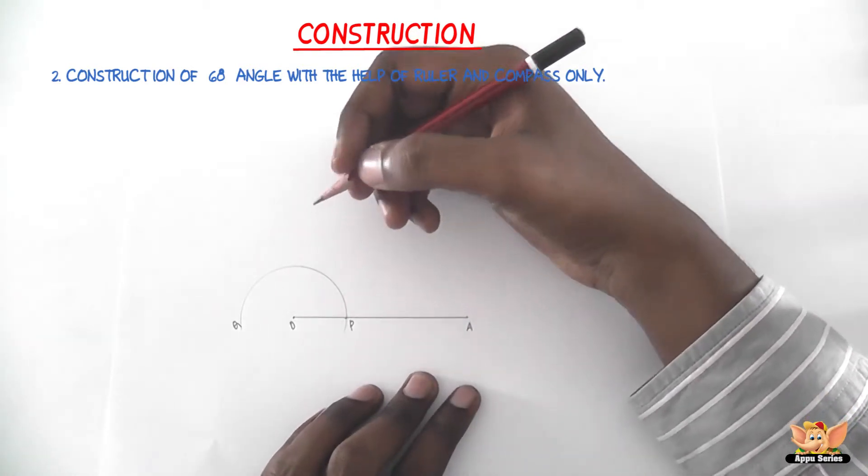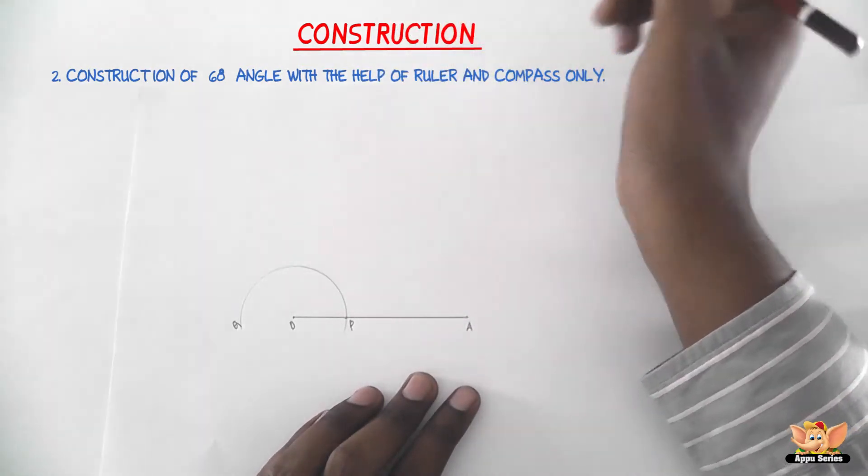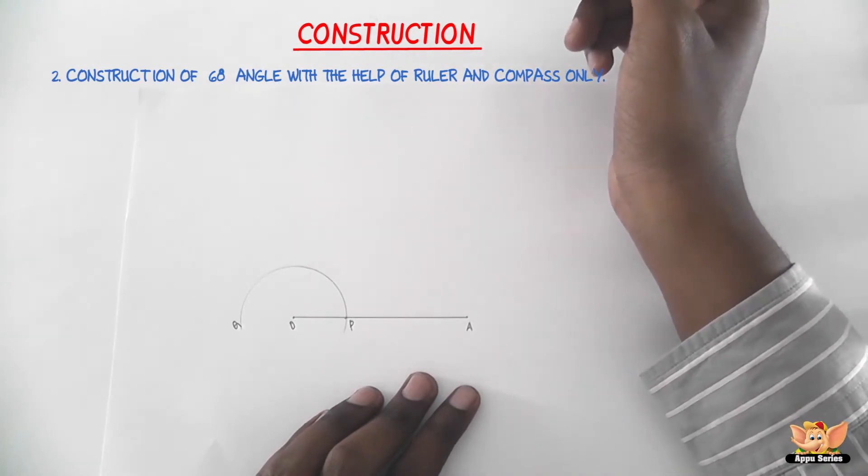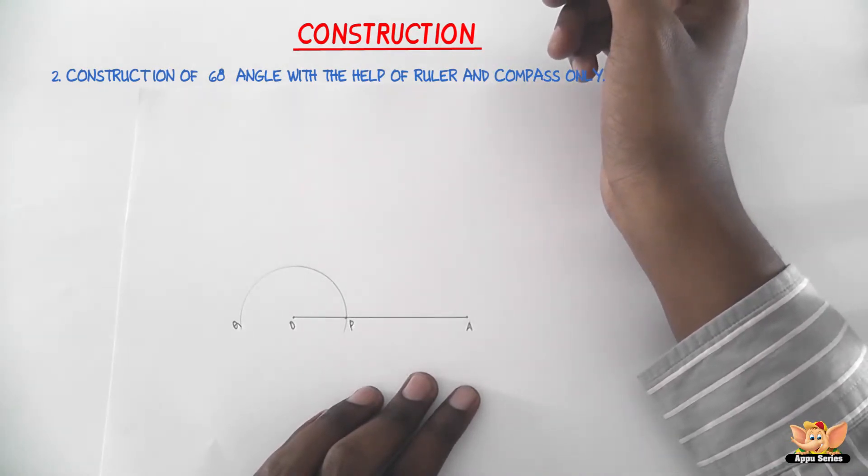The third step is with center P and the same radius, draw an arc cutting the arc PQ at R.